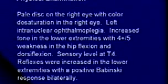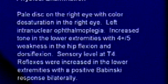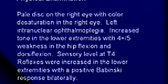On physical exam, she has a pale disc on the right eye with color desaturation, consistent with optic neuritis. She has increased reflexes in the lower extremities with a positive Babinski. These are all upper motor neuron signs consistent with multiple demyelinating disease — multiple lesions in her white matter throughout her CNS.